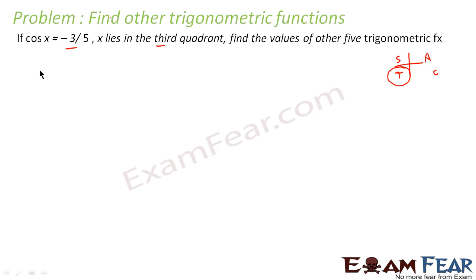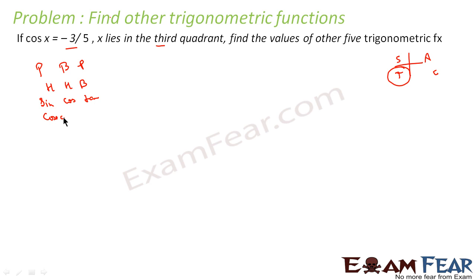So what we will do? We will use our mantra: Pandit, Badri, Pashaan, Hari, Hari, Mor. This gives us sin, cos, tan, and 1 by sin is cosec, 1 by cos is sec, and 1 by tan is cot. We have to write these formulas before solving any question. If you write these two things, you can solve the question.